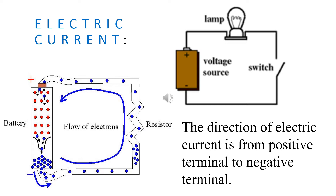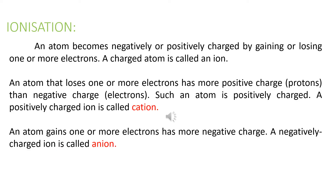Before we proceed to the chemical effects of electric current, we need to understand the basic ideas of ionization, electrodes, and electrolyte. Ionization means an atom which is neutral — that is, it doesn't have a charge like plus or minus — is considered to be neutral.